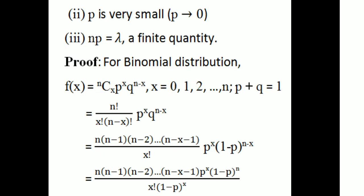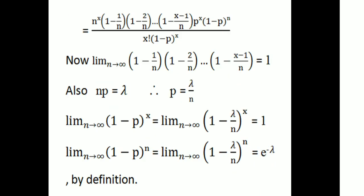Rearranging the numerator, we write n raised to x times (1 - 1/n)(1 - 2/n)...(1 - (x-1)/n), times p raised to x times (1-p) raised to n, divided by x factorial times (1-p) raised to x. Taking the limit as n tends to infinity: the terms (1 - 1/n), (1 - 2/n), etc. all tend to 1, and (1-p) raised to x tends to 1. Also, since np = lambda, p equals lambda/n.